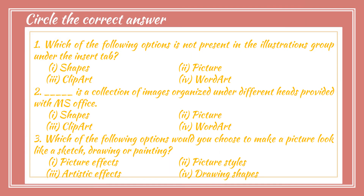MCQs: Number one — which option is not present in the Illustrations group under the Insert tab? The answer is Word Art, because Word Art belongs to the Text group. Number two — Clip Art is a collection of images organized under different heads provided with MS Office. Number three — to make a picture look like a sketch, drawing, or painting, you would choose Artistic Effects.